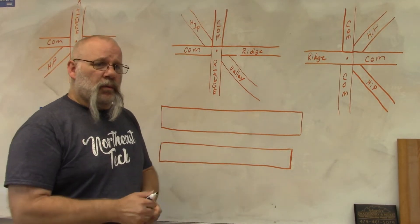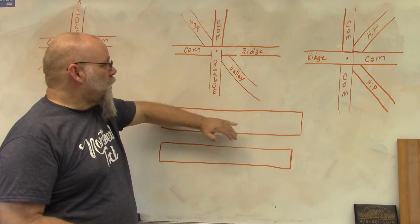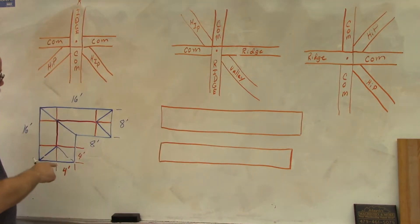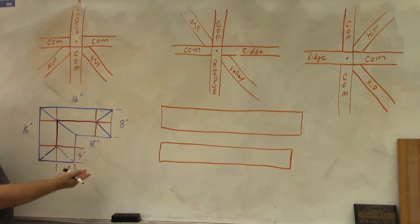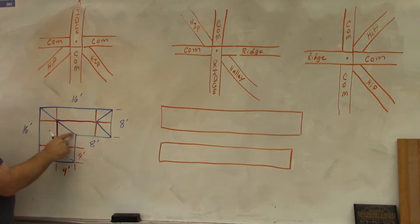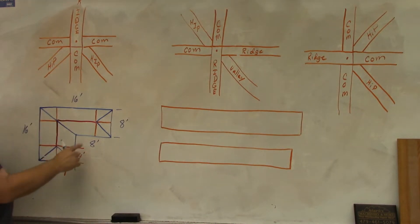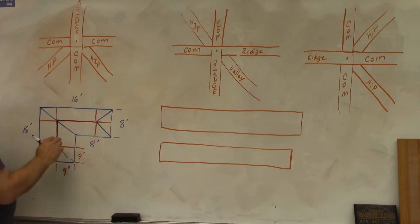In this video I'm going to show you how to figure the ridge board lengths for a hip roof. This is a drawing of a hip valley — you've got a hip over here, a hip here, a valley rafter in here, and a hip rafter over here. The orange ones are your commons and the red ones are your ridge boards.